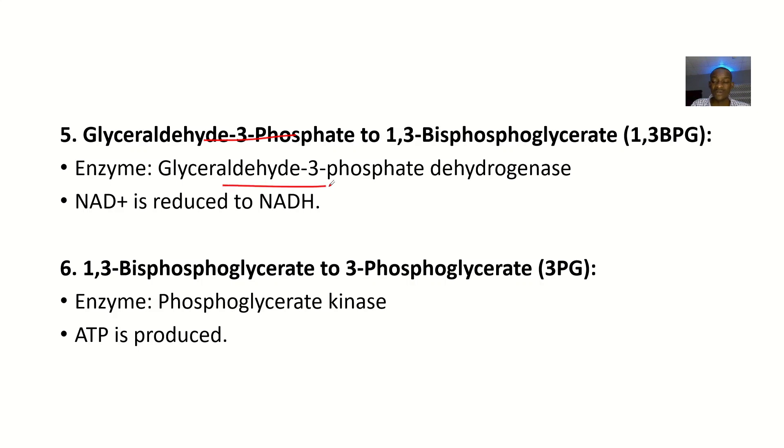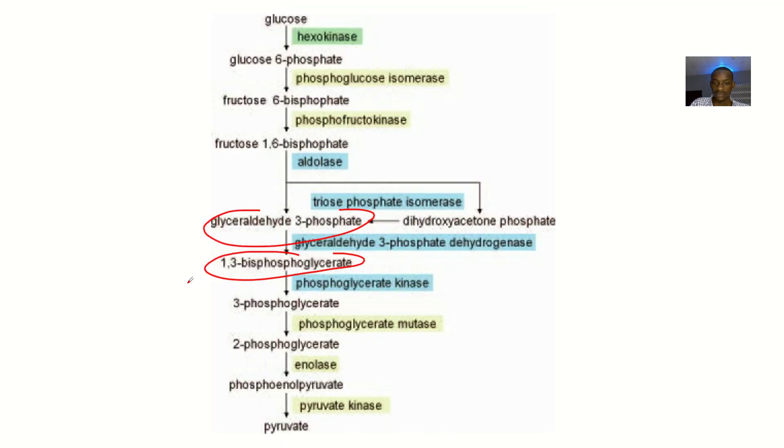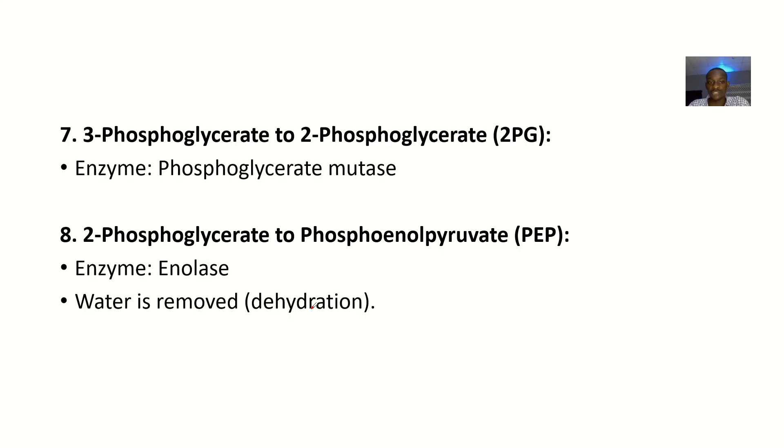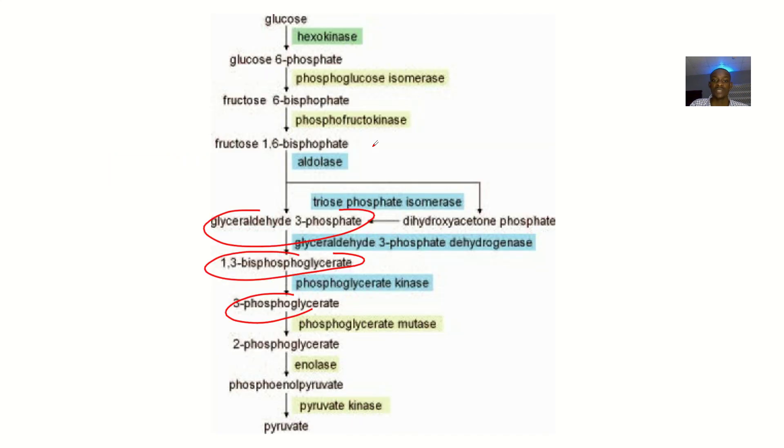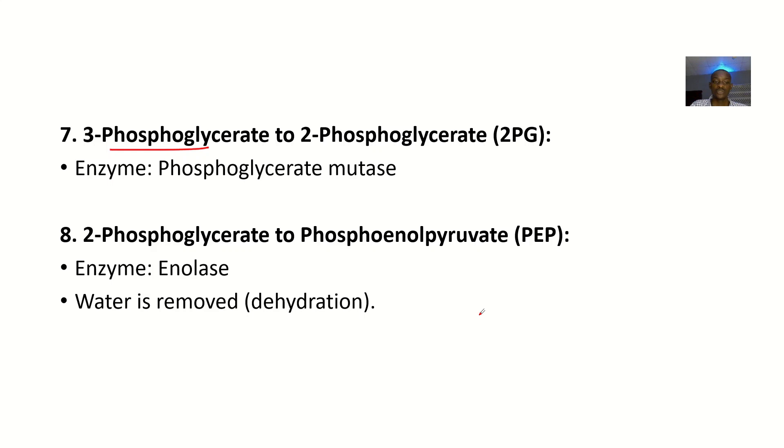The next step is 1,3-bisphosphoglycerate converted to 3-phosphoglycerate. Then we have 3-phosphoglycerate converted to 2-phosphoglycerate. The enzyme there is phosphoglycerate mutase.